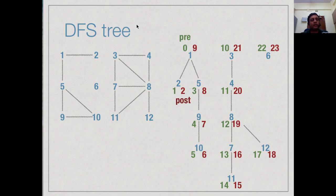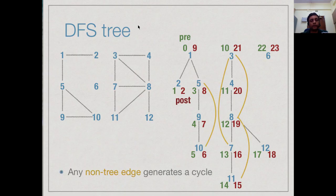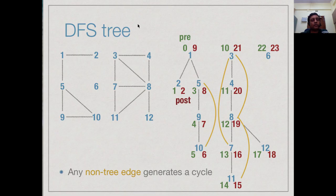Like BFS, DFS generates a collection of trees — when done on a disconnected graph, each connected component generates a DFS tree. The edges not explored are non-tree edges, shown in a different color. For example, the edge between 5 and 10 was not explored because 10 was reached directly from 9. Just as in BFS, if there are non-tree edges after DFS, there is a cycle. Both BFS and DFS on an undirected graph can reveal a cycle through the presence of a non-tree edge.